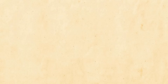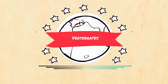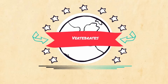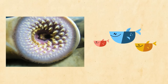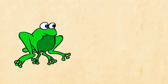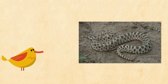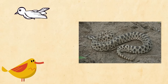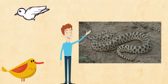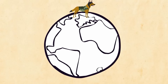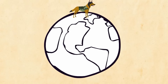Vertebrates, on the other hand, have a backbone. Examples include the fish called lancelets and lampreys, many other types of fish, amphibians such as frogs, reptiles which include snakes, many birds, and even mammals, which we are. Animals are found on every continent on Earth, and they have adaptations that help them survive.